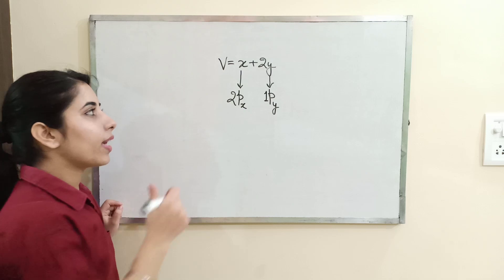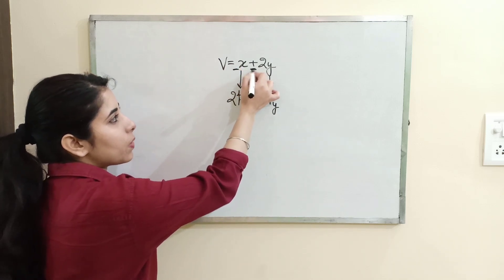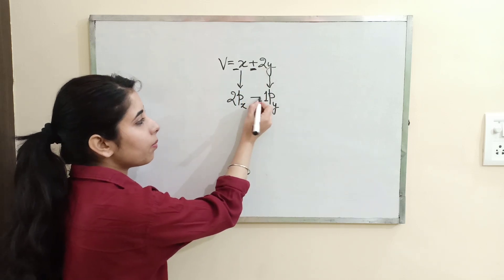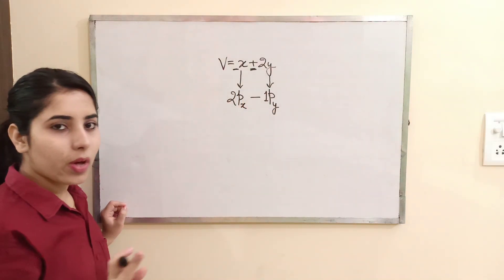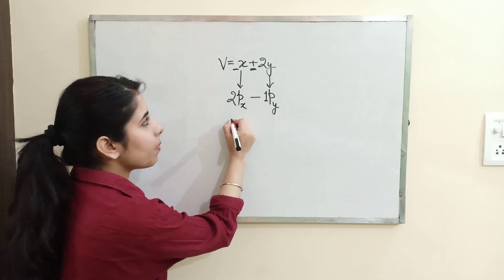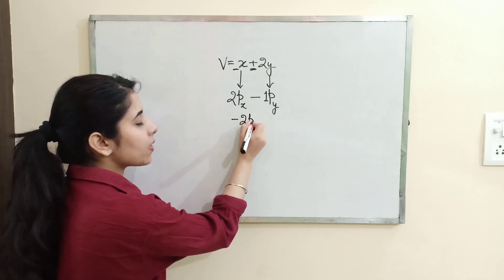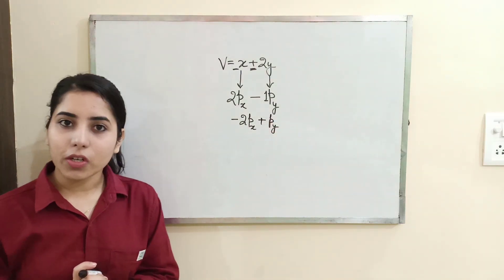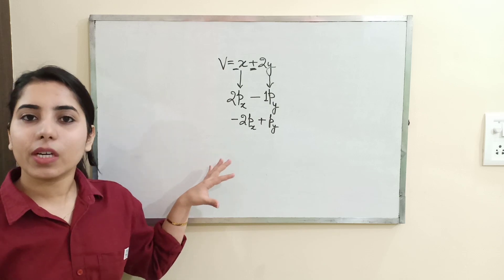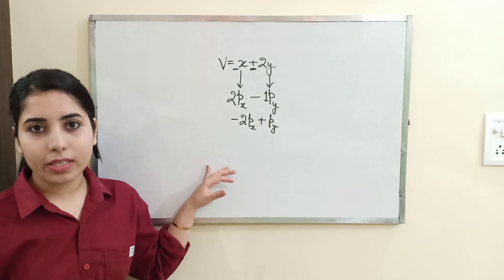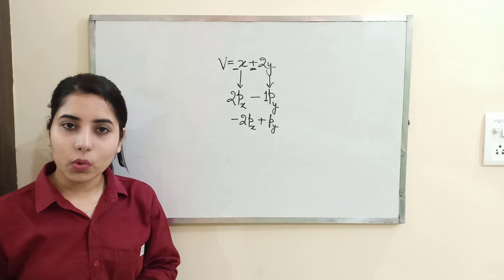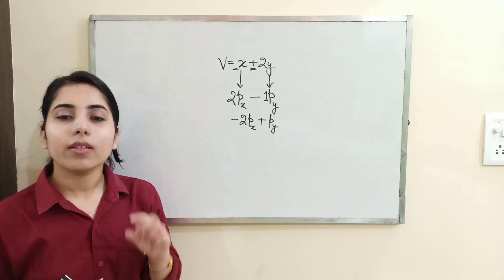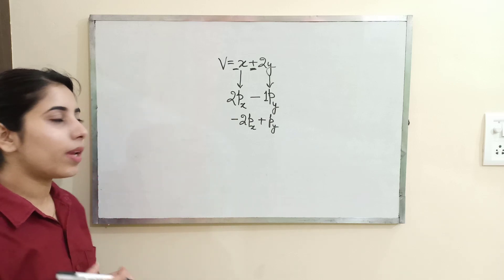After swapping the coefficients you need to change one sign. If you change the middle sign it will become 2px minus py. Or if you change the starting sign it becomes minus 2px plus py. Both of these represent the conserved quantity or constant of motion. So you can see how easy it is to write the conserved quantity corresponding to a given potential expression when it is required in terms of momentum. That was our first trick.